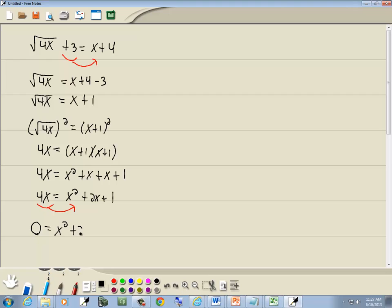And we get x squared plus 2x minus 4x plus 1. 2x minus 4x is negative 2x plus 1.